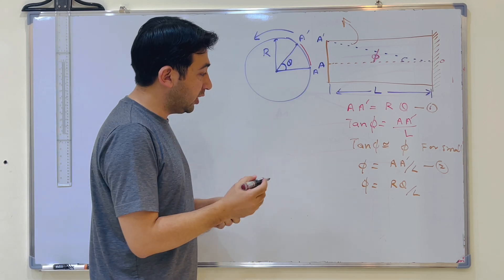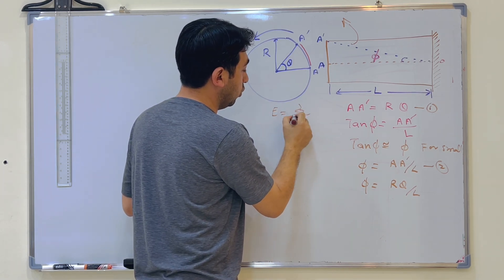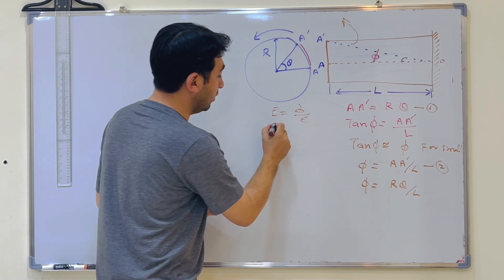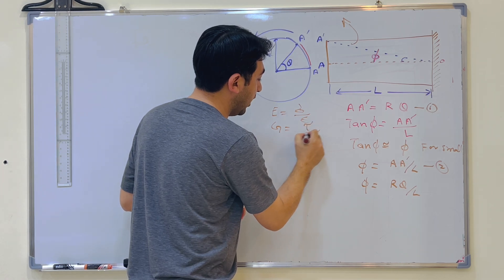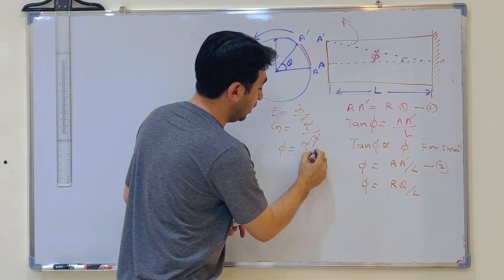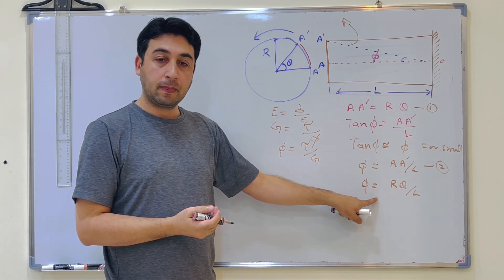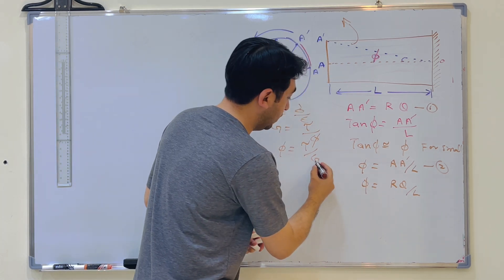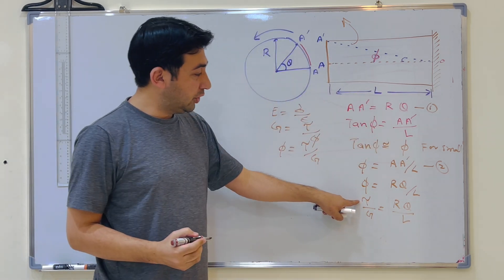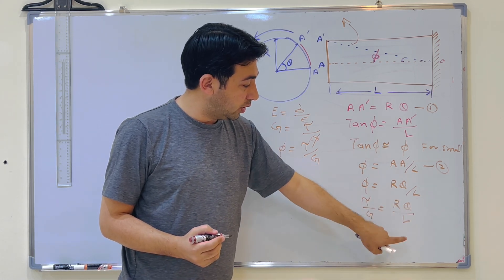Phi is the shear strain. We know that for torsion, the shear modulus G equals shear stress divided by shear strain, so G equals tau over phi. Therefore phi equals tau divided by G. Substituting into our equation gives tau/G equals r·theta/L, which rearranges to tau/r equals G·theta/L. Here tau is the shear stress, G is the shear modulus, r is the radius, theta is the angle of twist, and L is the length of the shaft.